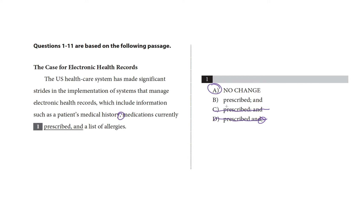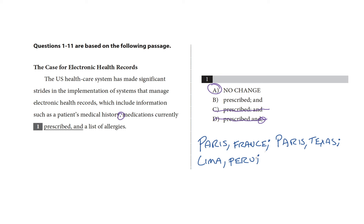Choice B uses a semicolon, which can be used to punctuate a list, but only complex lists — like lists of cities where commas are already used within the listed terms. For example: I've been to Paris, France; Paris, Texas; Lima, Peru; and Lima, Illinois. You can see how these comma-separated items are themselves separated by semicolons — that's a complex list. What we're looking at here is not a complex list, so we don't need that semicolon.